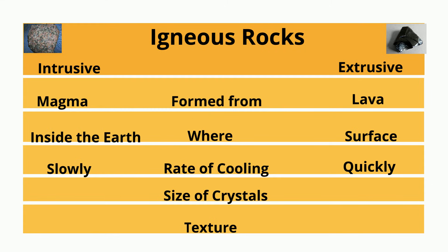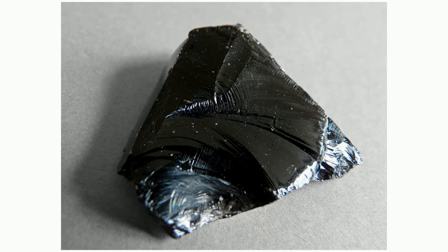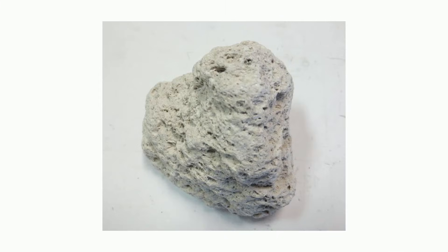Extrusive rocks may have really small crystals — smaller than 1 mm — or no crystals at all. Sometimes they may be vesicular, which means the rock may have air bubbles.